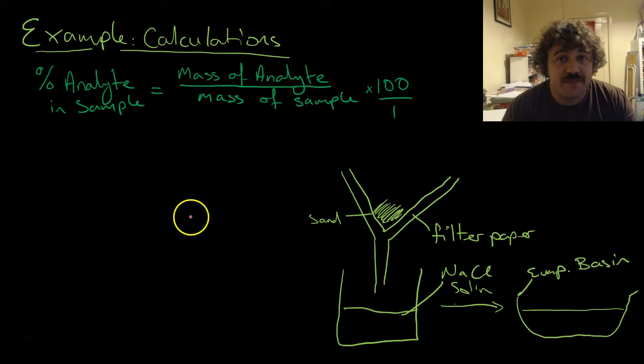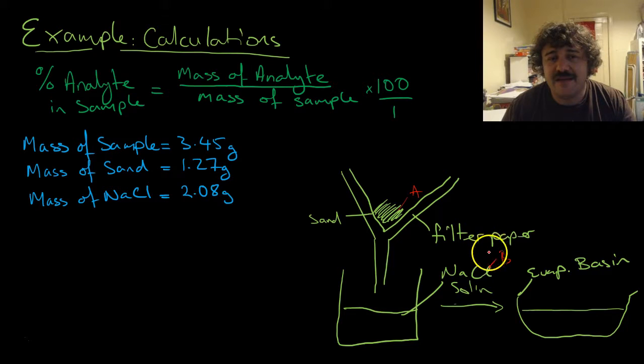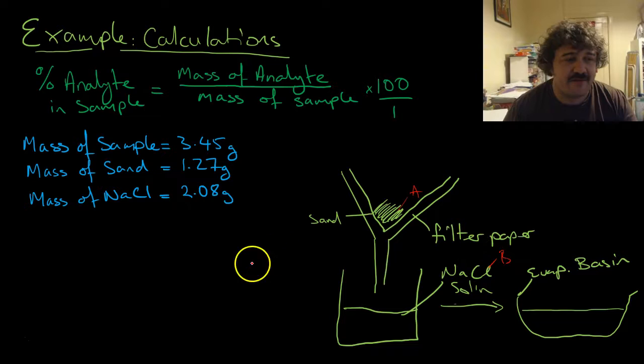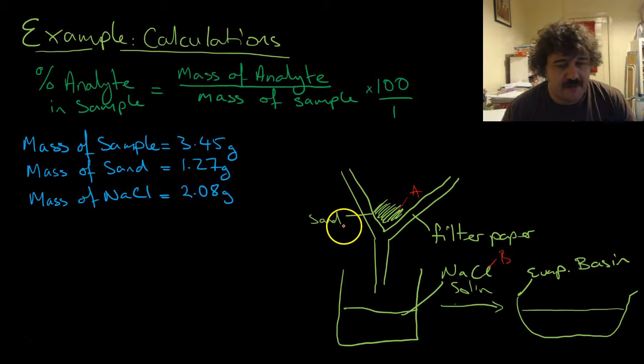It's simple - what percentage of the total mass is it? Now we want to know the mass of this and this. So that actually makes this analyte A and B. But they're both analytes. You'll see why we measure both of them in a minute. There's a good reason for it.